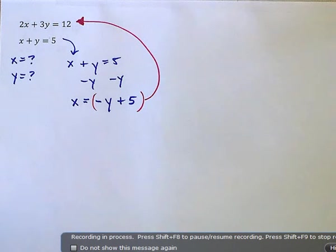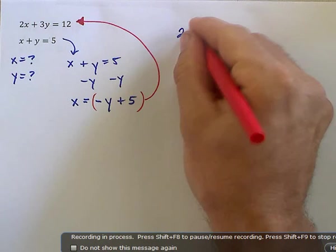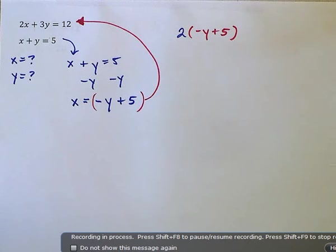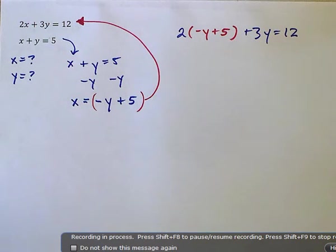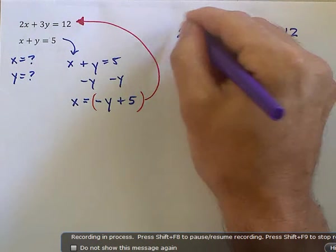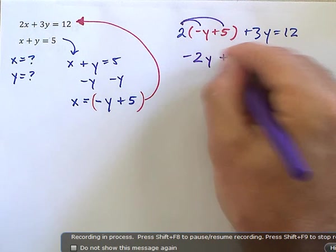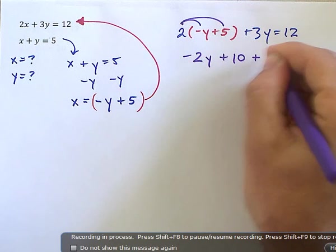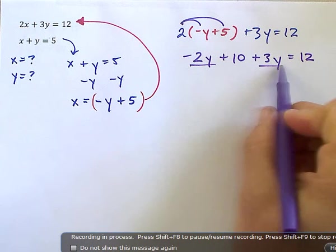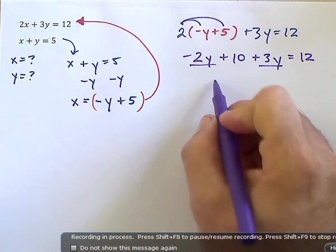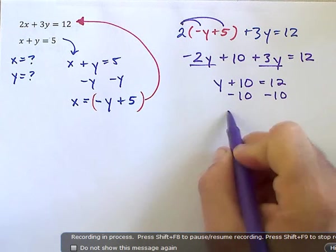And that would give me 2. What is x? Negative y plus 5 plus 3y is equal to 12. And then I'm going to make sure I distribute here and get negative 2y plus 10 plus 3y is equal to 12. Combine like terms. Negative 2y, that's a y plus 10 is equal to 12. Subtract 10. My y is equal to 2.